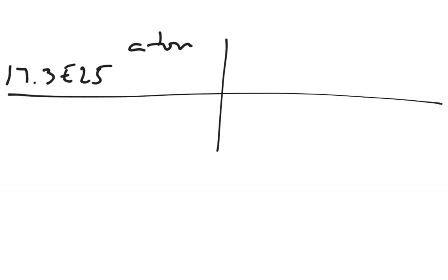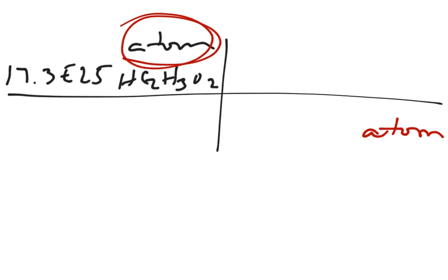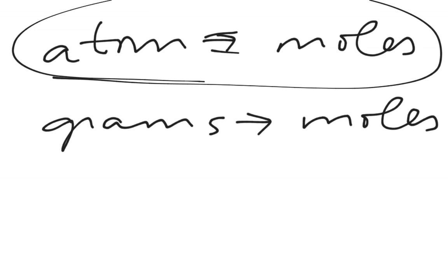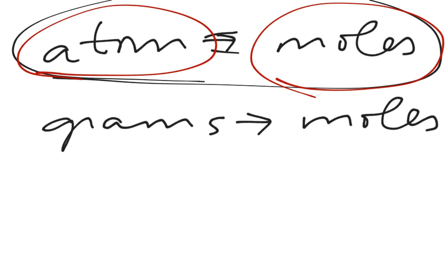So if we go back to that number, we have 17.3 times 10 to the 25th atoms of acetic acid. Then I'm going to take and I'm going to look at what this is, and I'm going to put that same thing down here. Whatever this is, I'm going to put the same thing down here. Then I'm going to look back and say, okay, so I've got my atoms, this is what goes on top of that. So this becomes my moles.